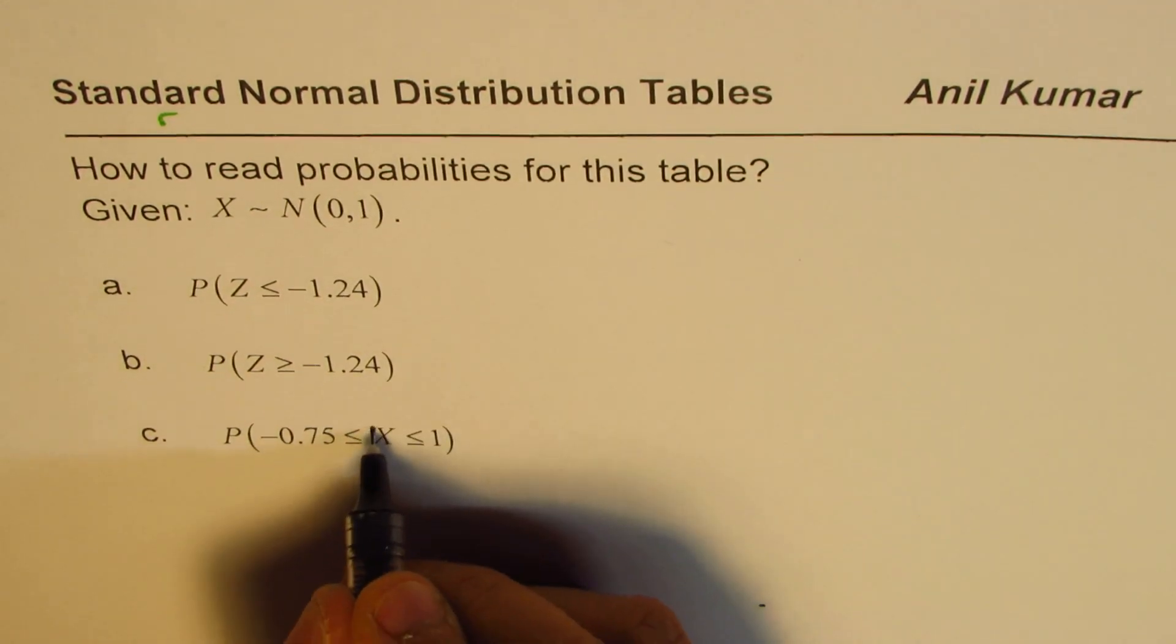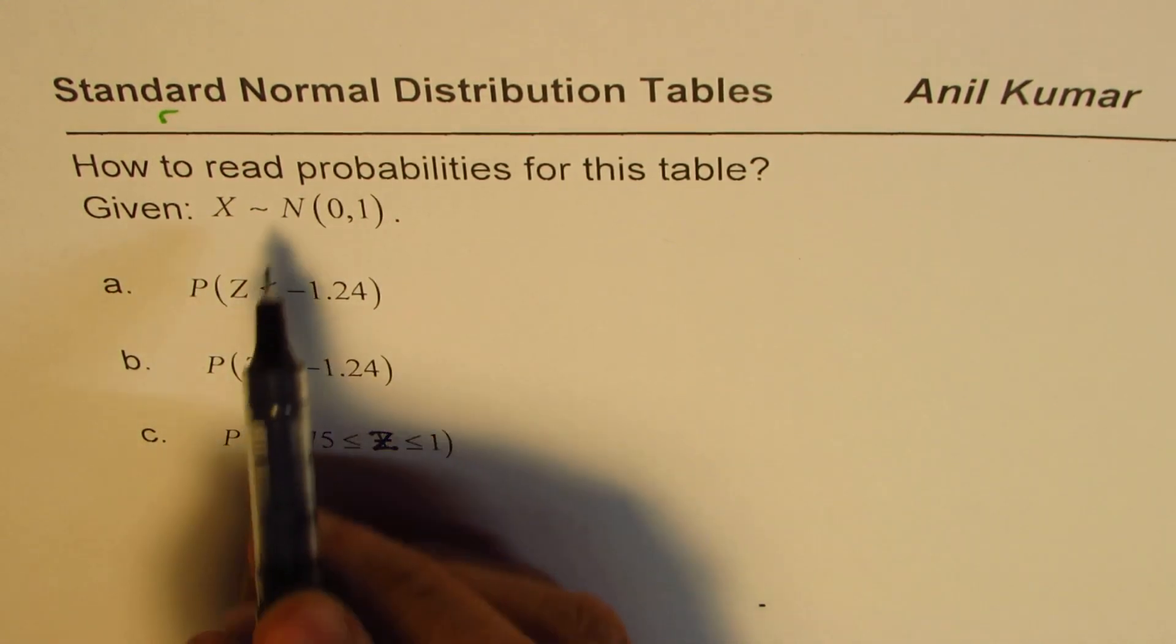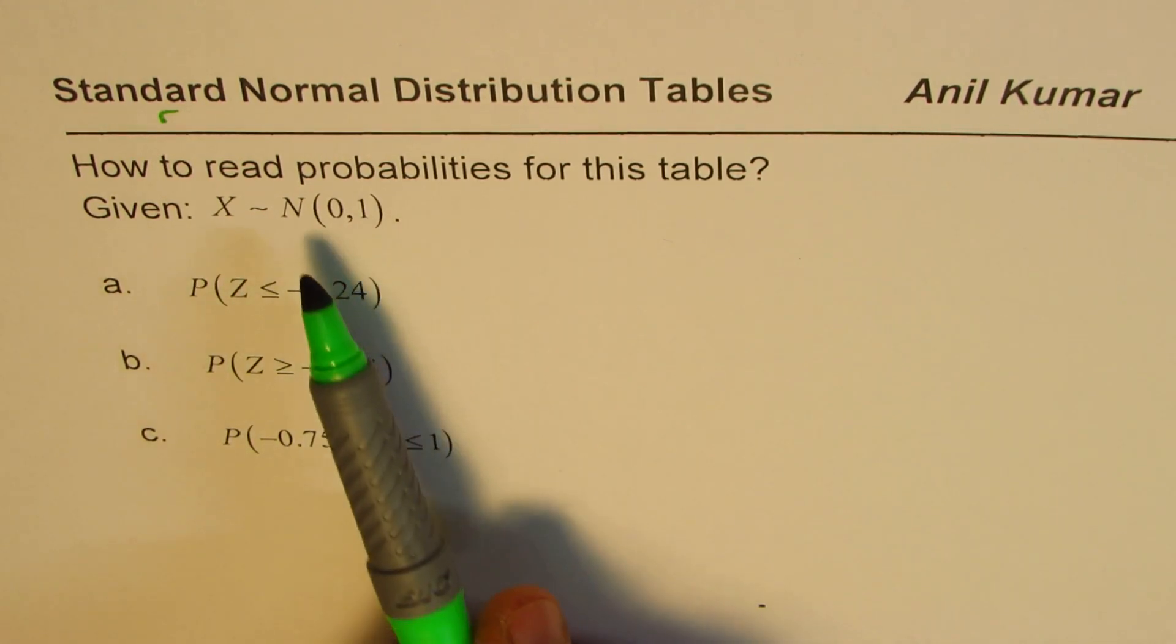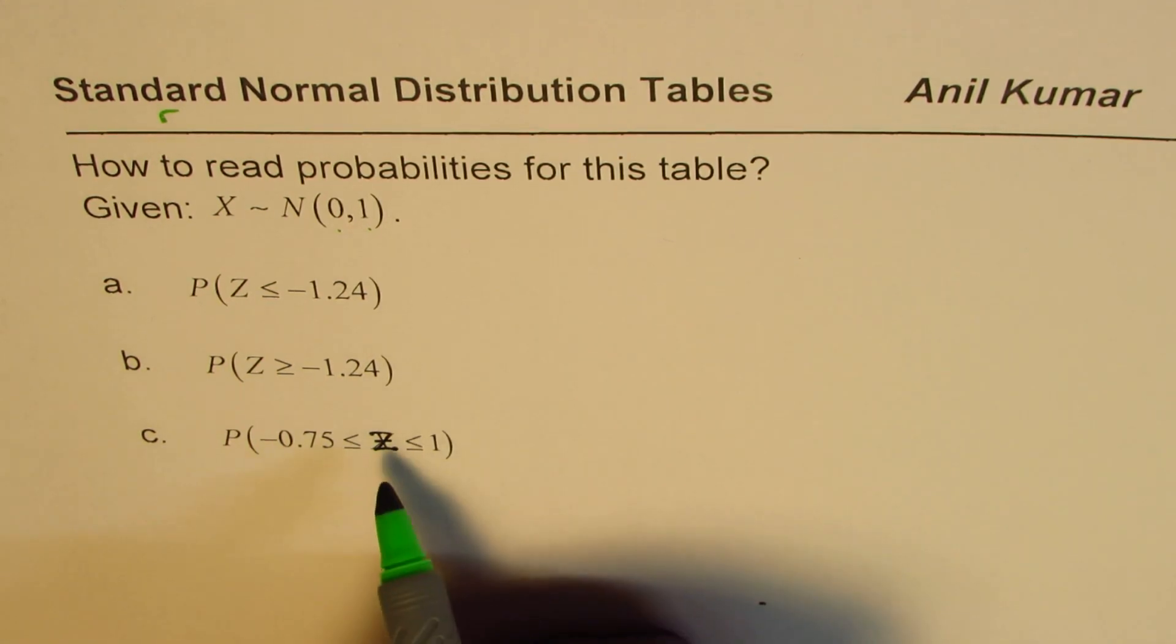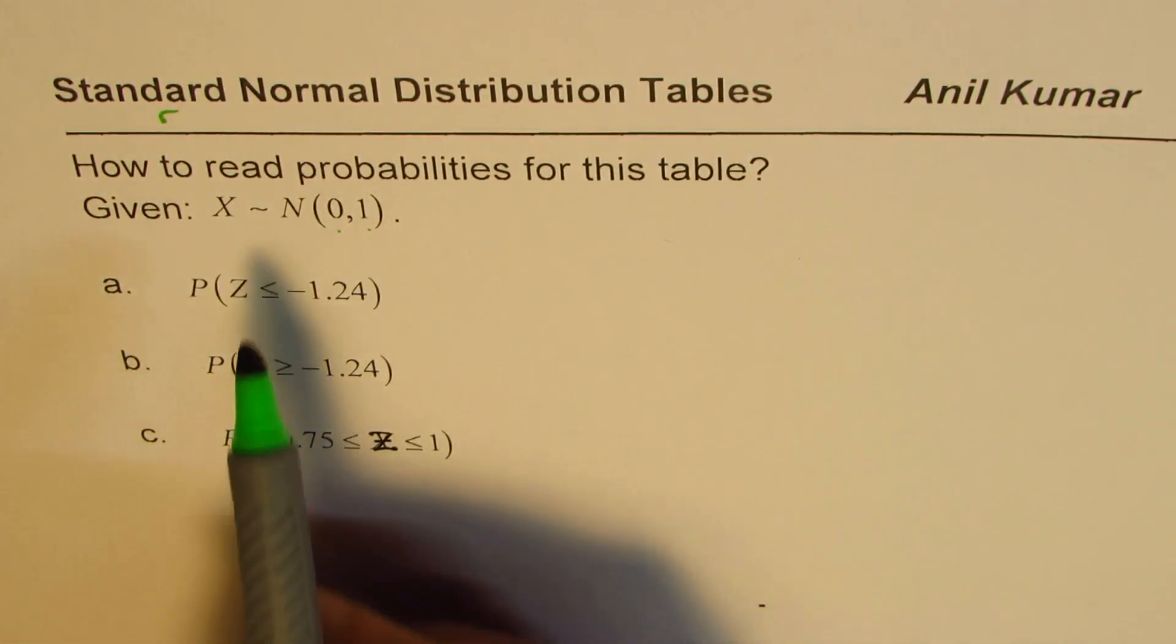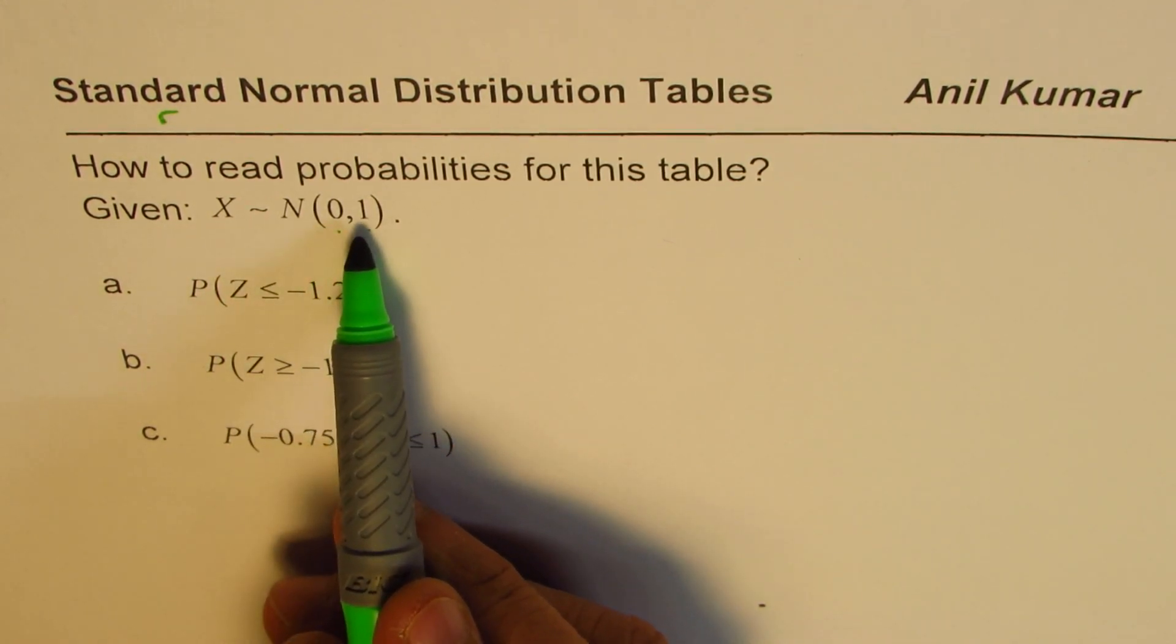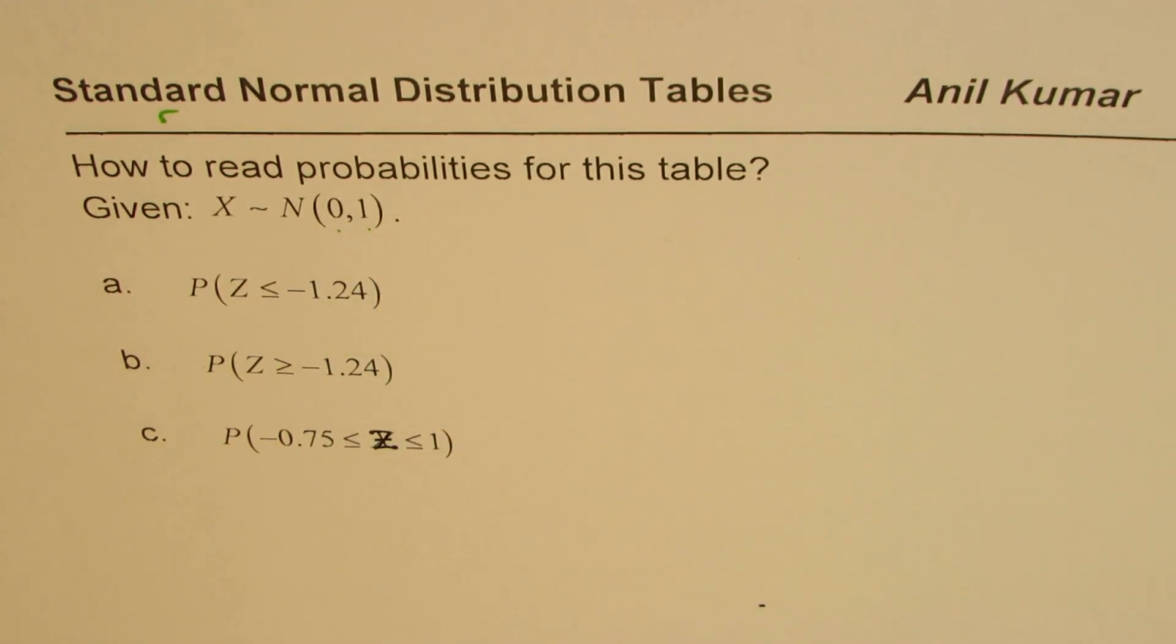So let me change this to z. Even if I write x, since it is a normal distribution, normalized 0 and 1, x and z-scores are exactly the same things. So whenever you have a distribution where mean is 0 and variance is 1, the normal distribution is a standard one.